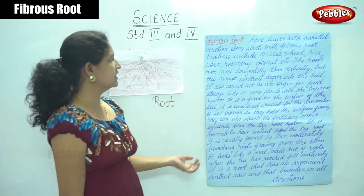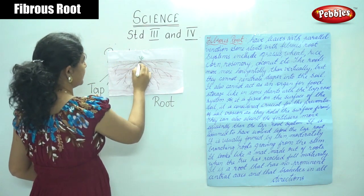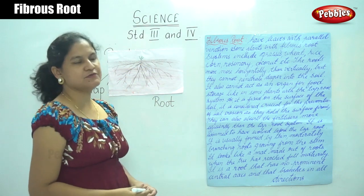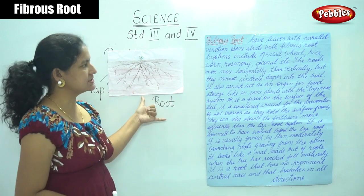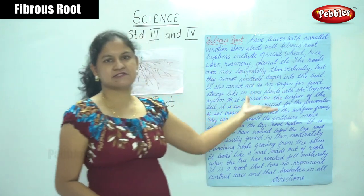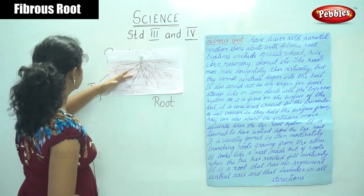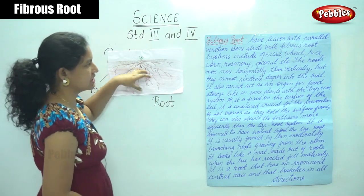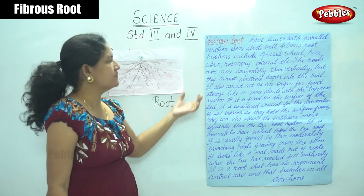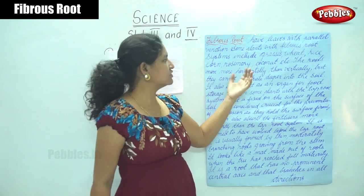Moving on to the fibrous root — plants with a fibrous root system have leaves with parallel venation. Some plants with a fibrous root system include grasses, wheat, rice, corn, rosemary, and coconut. These plants have a fibrous root system where the leaves appear with parallel venation.